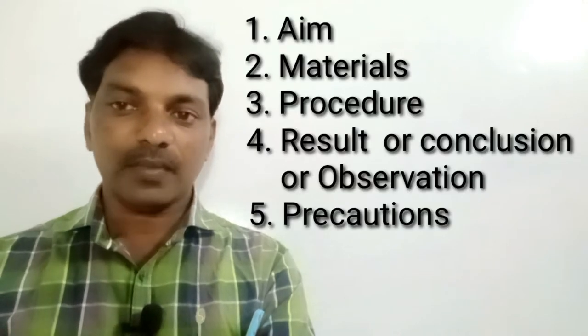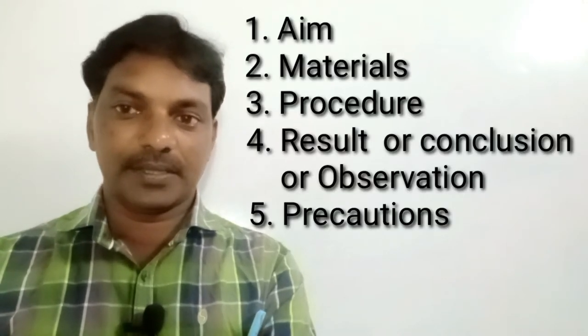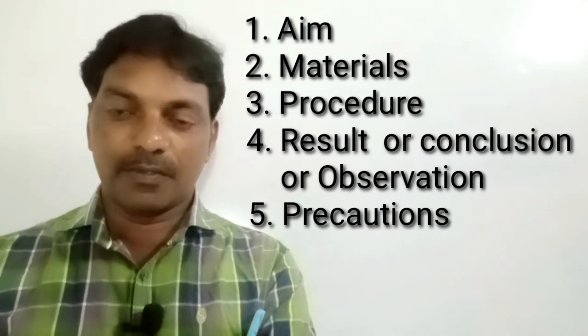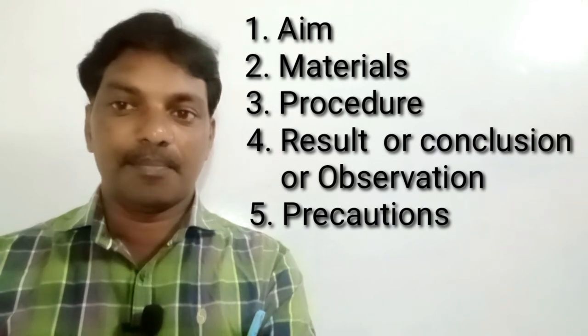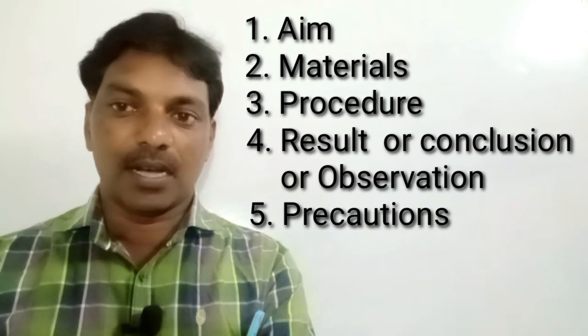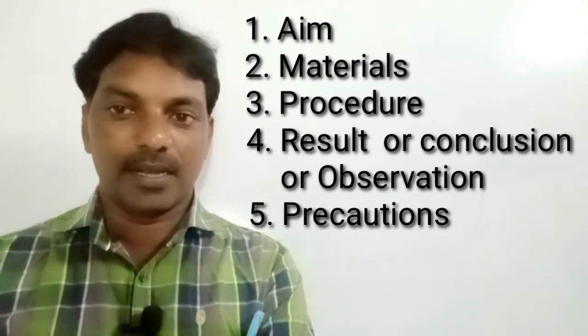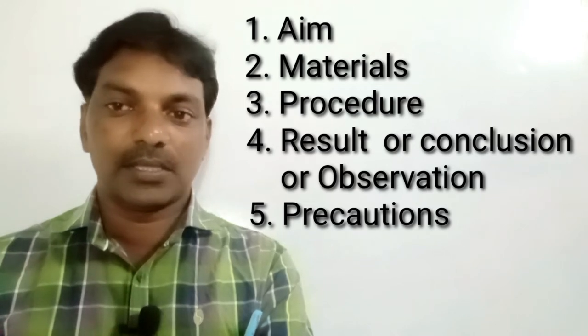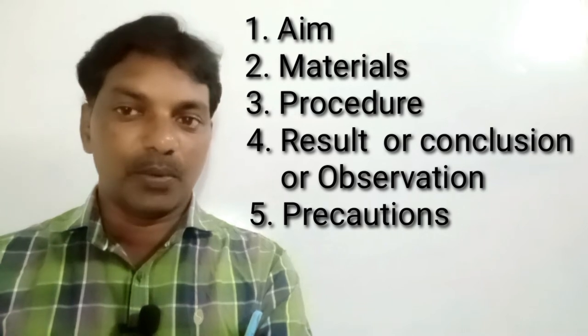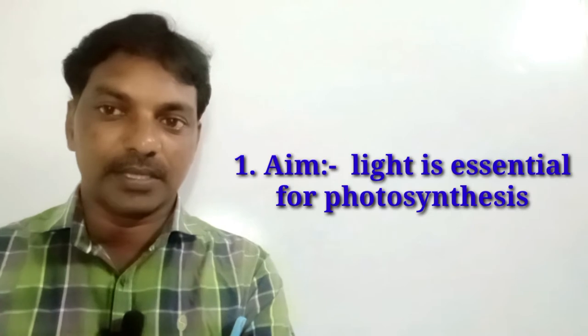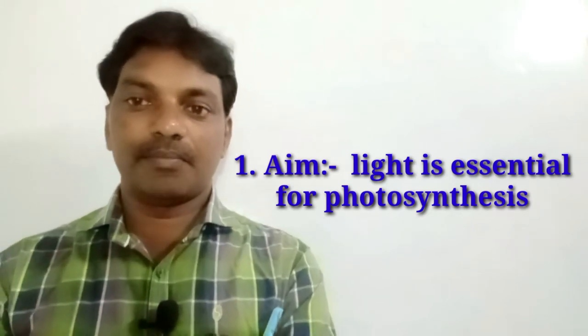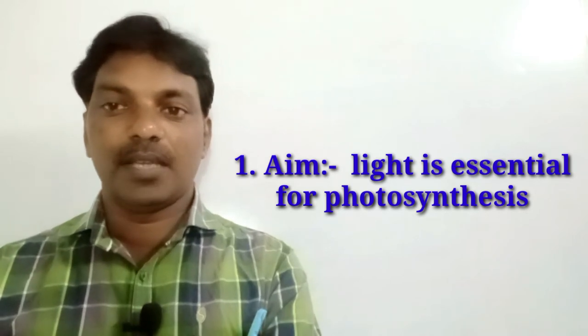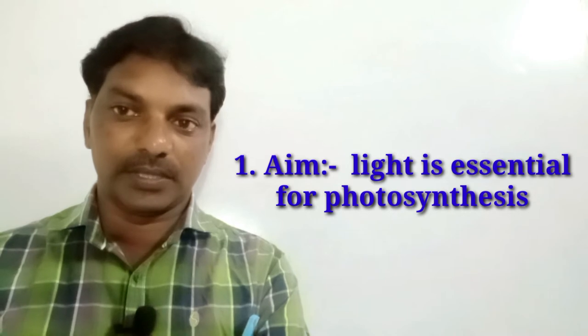This is a lab activity, and for this we have to write five steps — as you already learned in eighth and ninth grade. The five steps are: first, aim; second, materials; third, procedure; fourth, result or observation or conclusion; and fifth, precautions. We will start with the aim: light is essential for photosynthesis.